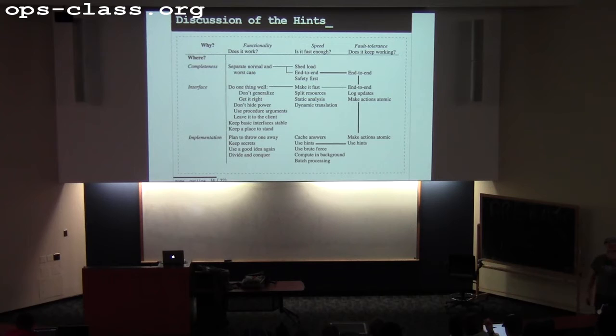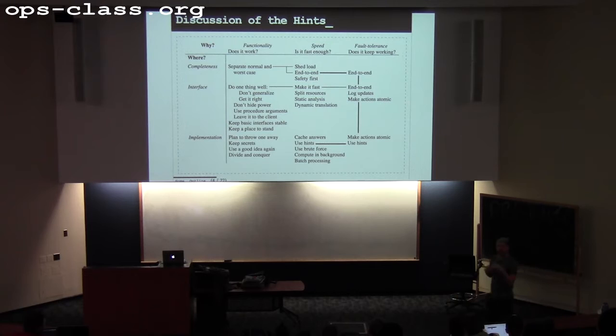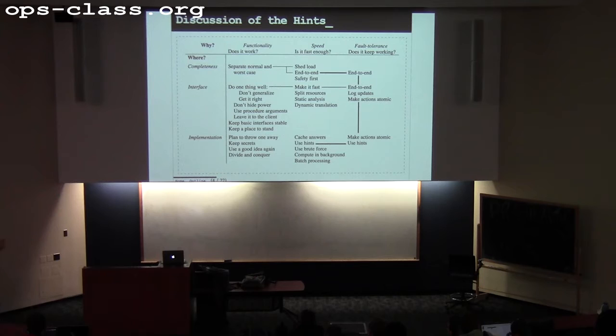Simple example: sorting can be either stable or unstable. The current implementation of a function may not guarantee anything about the stability of that sort. If you rely on observed stability without it being guaranteed in the interface, and someone changes the implementation later, your code breaks. So writing good interfaces involves not exposing too much implementation detail. Look at all these Butler-Lampson hints — this is one of the best compilations of wisdom about how to build software ever assembled.